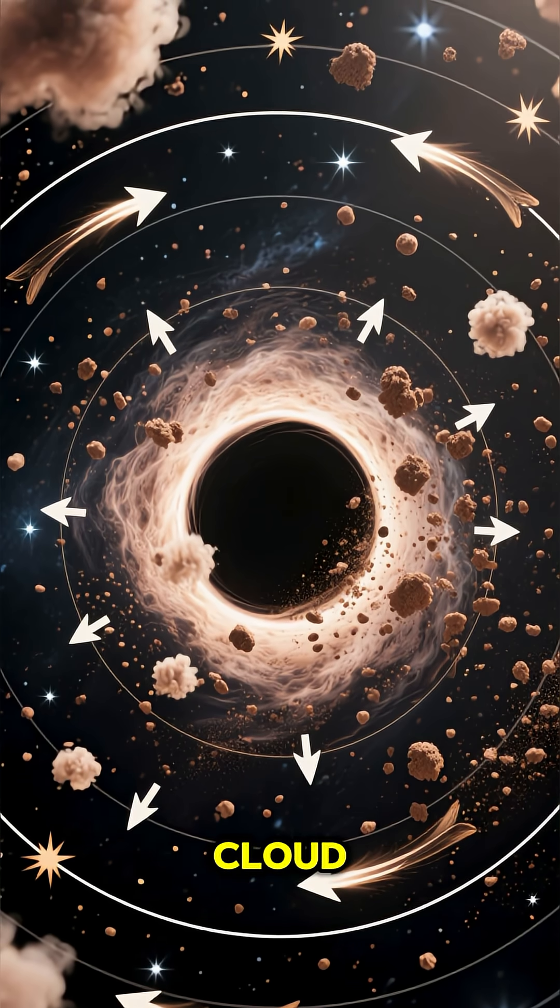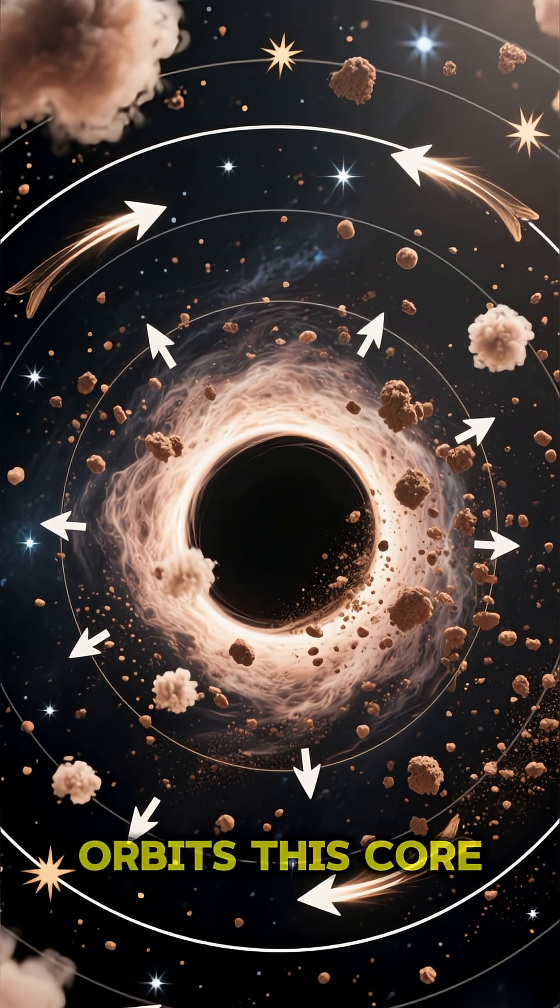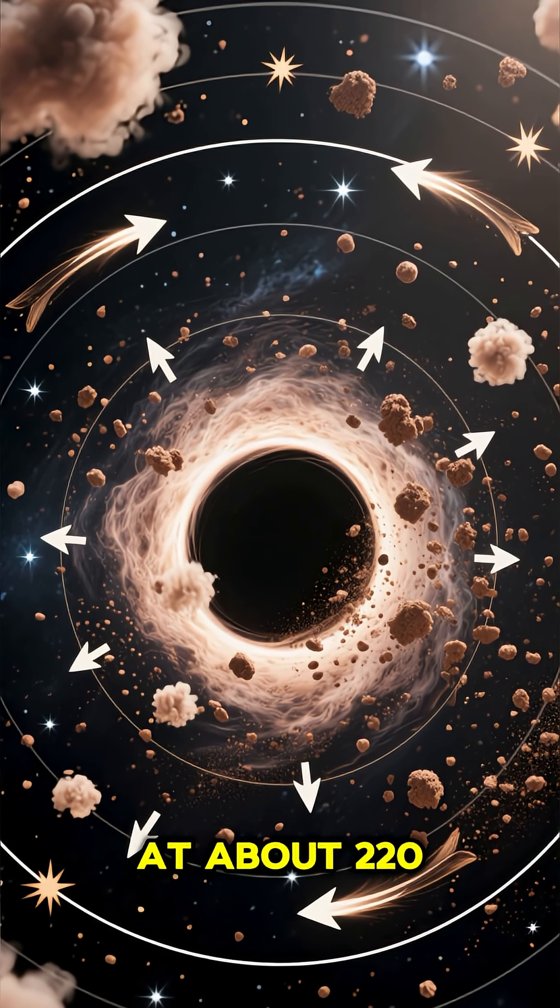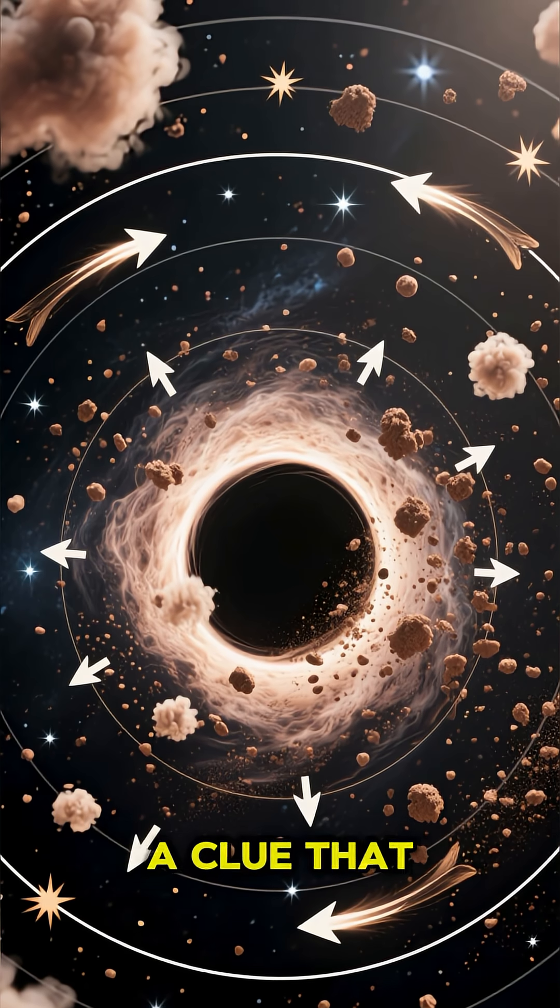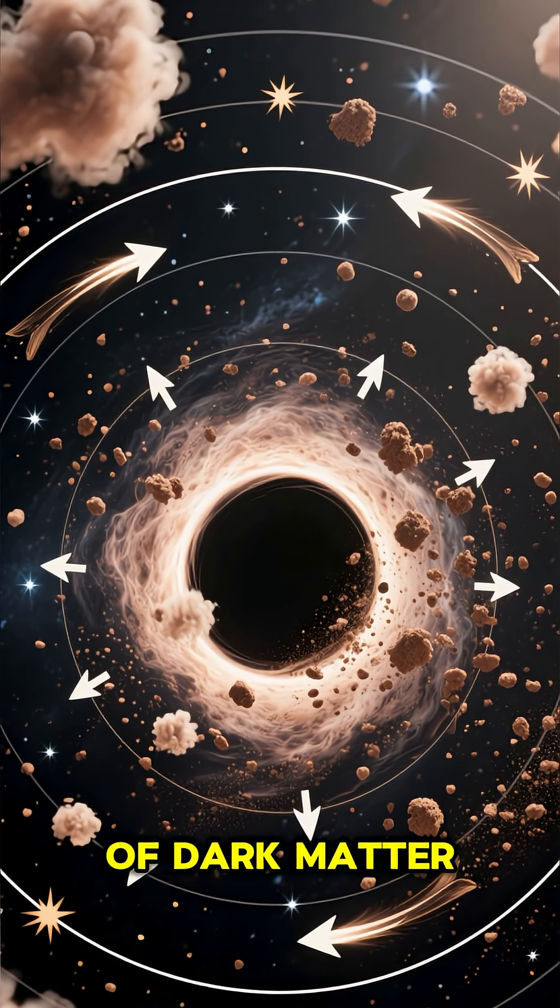Every star, gas cloud, and dust particle in the Milky Way orbits this core at about 220 kilometers per second, a clue that a huge halo of dark matter surrounds us.